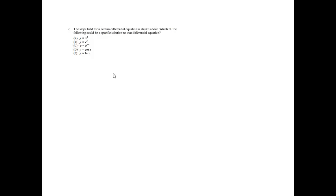Problem 7. The slope field for a certain differential equation is shown above. Which of the following could be a specific solution? Looking at the slope field, I can draw a curve that looks like a natural log curve. So the answer is E. I'm not looking for derivatives — just what kind of curve all the slope field arrows together form.